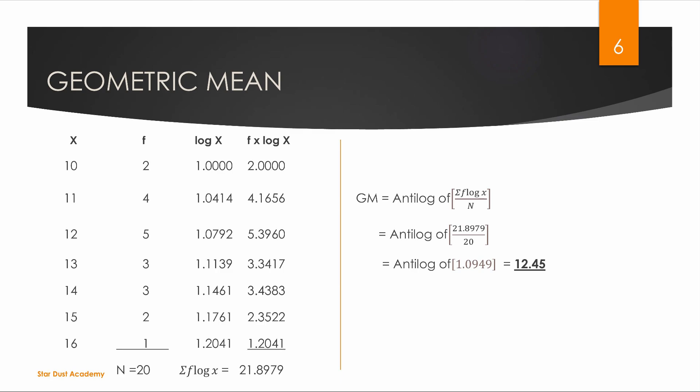We multiply x by the frequency f. If we use x to log x, then we multiply f into log x. We write the total of f into log x, and also write the total of n. The GM formula becomes antilog of sigma f log x divided by n, where n equals 20.